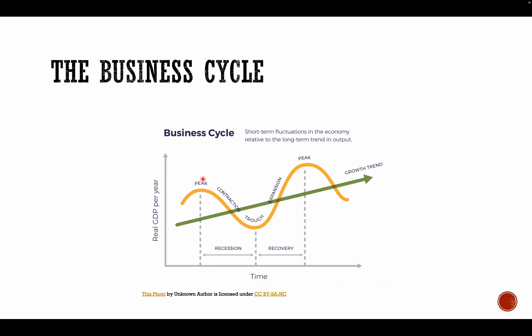This peak of the cycle is called a boom. During a boom, GDP — gross domestic product — is growing fast because the economy is performing really well. Existing firms will be expanding, new firms will be entering the markets, wages will be rising, and profits made by firms will be rising. Everything will be very good — it's a good part of the cycle.